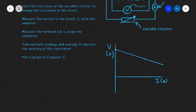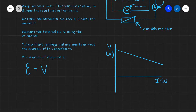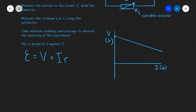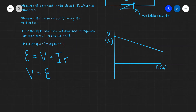Let's use y equals mx plus c analysis to determine the internal resistance. Starting with the basic equation: the EMF equals the terminal PD plus the lost volts, given by I times R. Rearranging for the y-axis variable — the terminal PD — we get that V equals the EMF minus I times R.